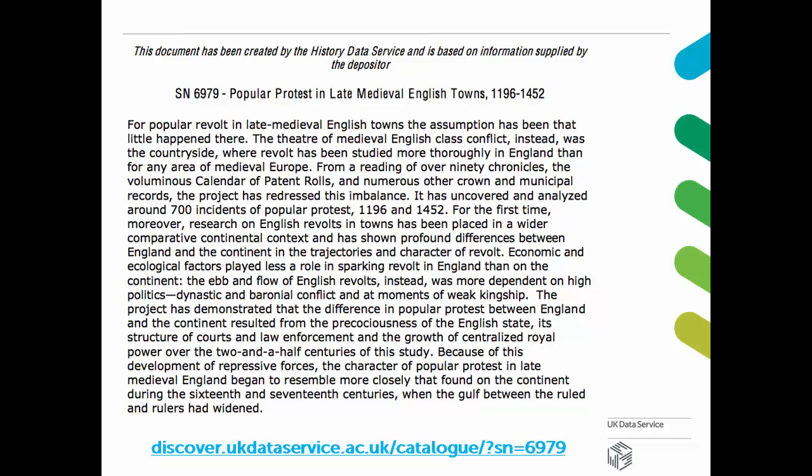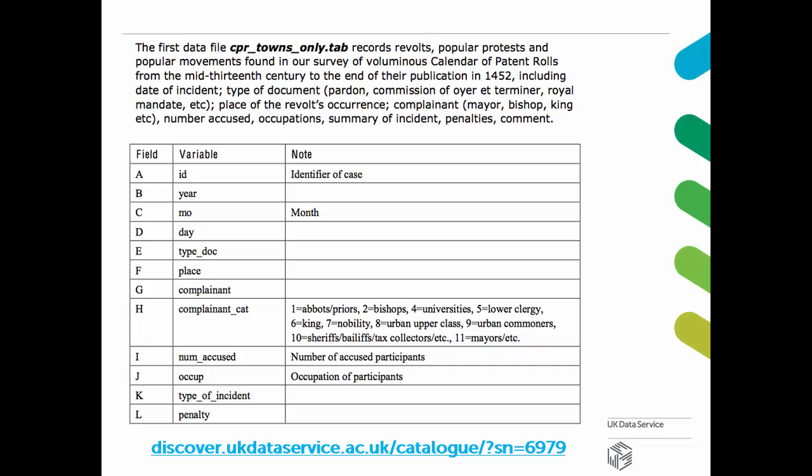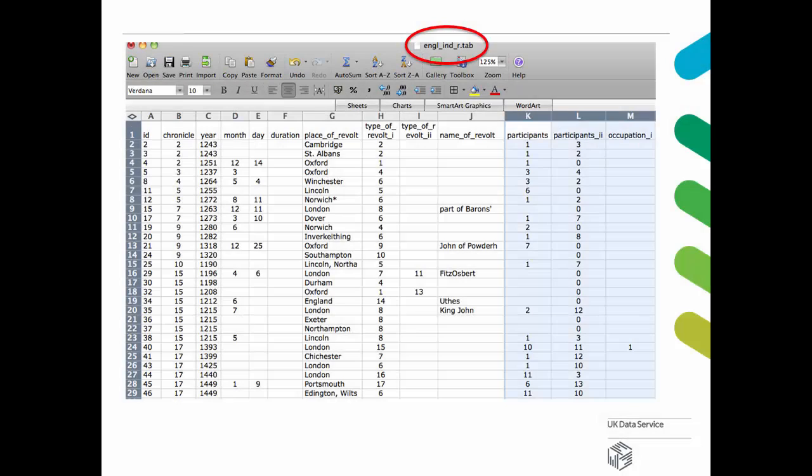Most of our studies we hold do not only contain the data but also a study guide, which may document the historical context of the study's topic. It also provides the study's variables and features of the data and a bibliography. In most cases, the data is available in a non-proprietary format, such as tab-separated values, and can therefore be used with both open source and proprietary software.